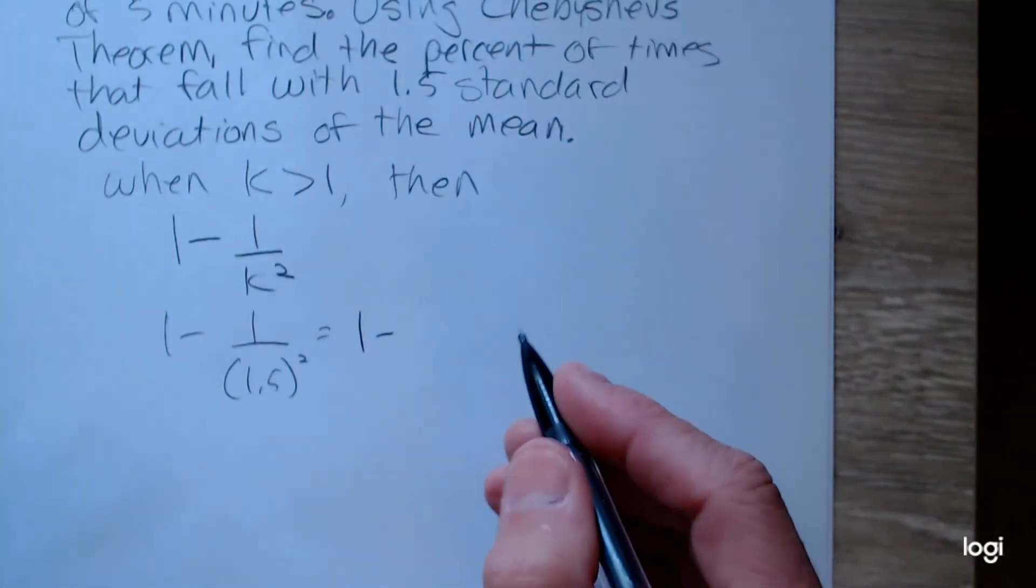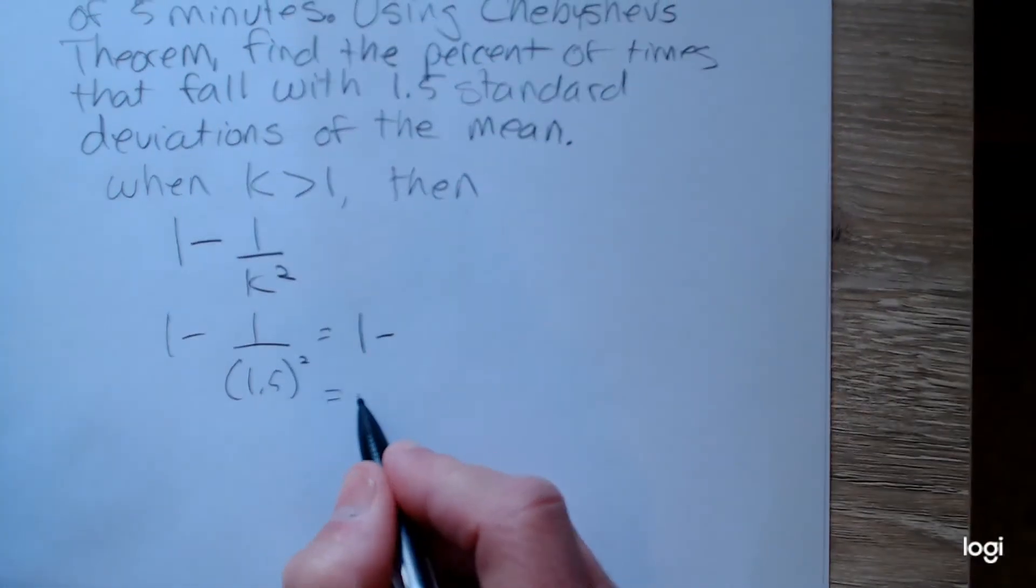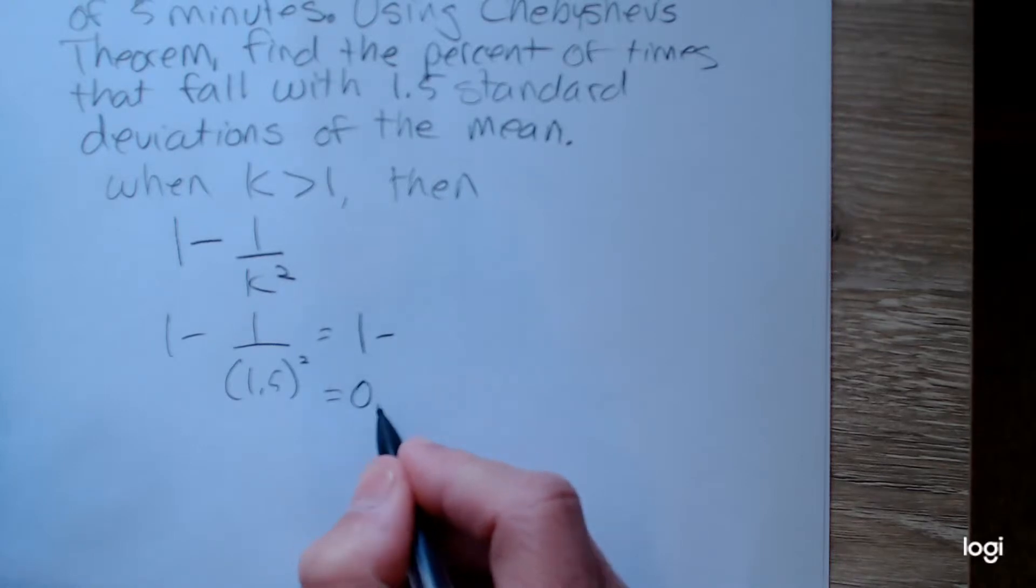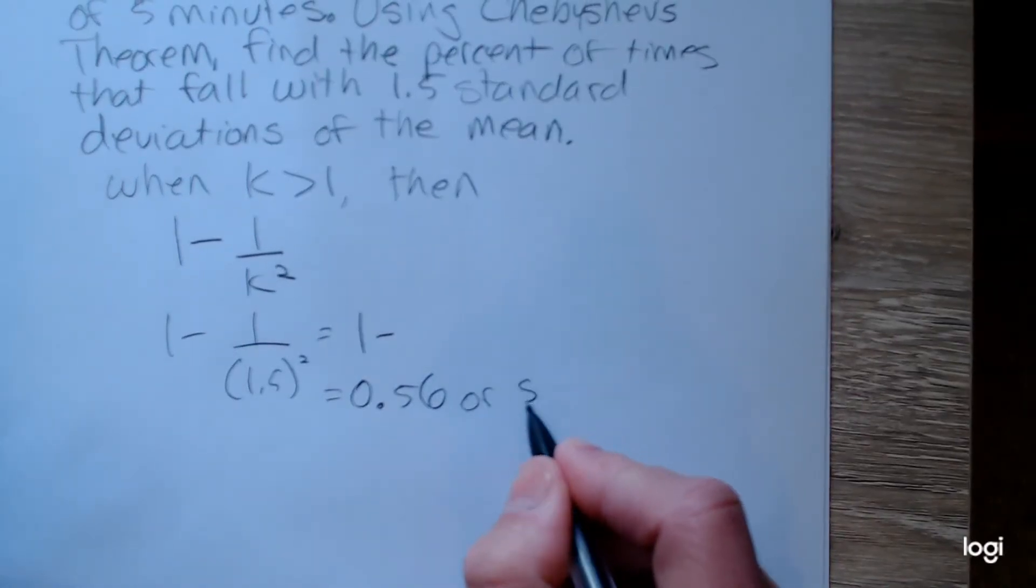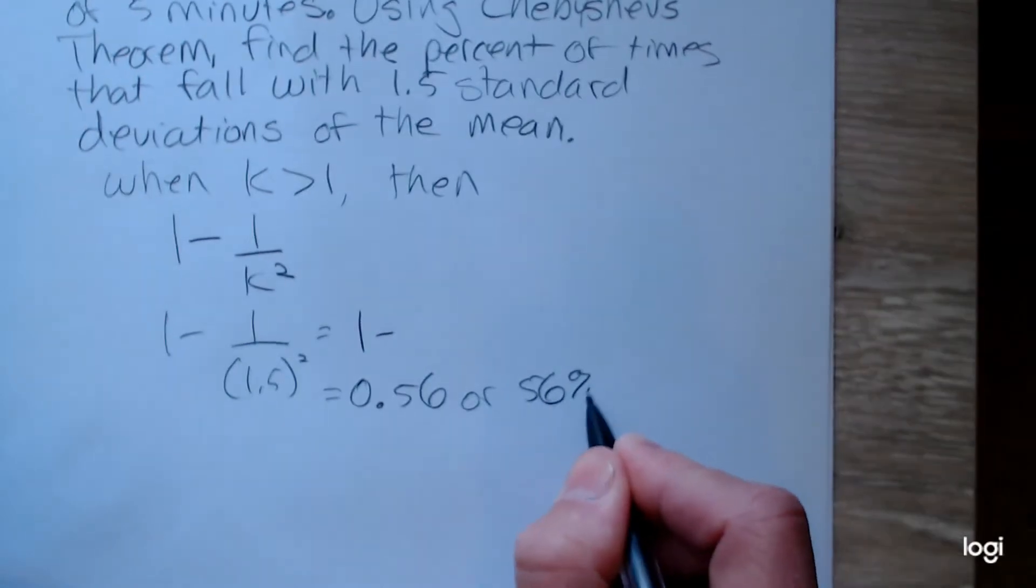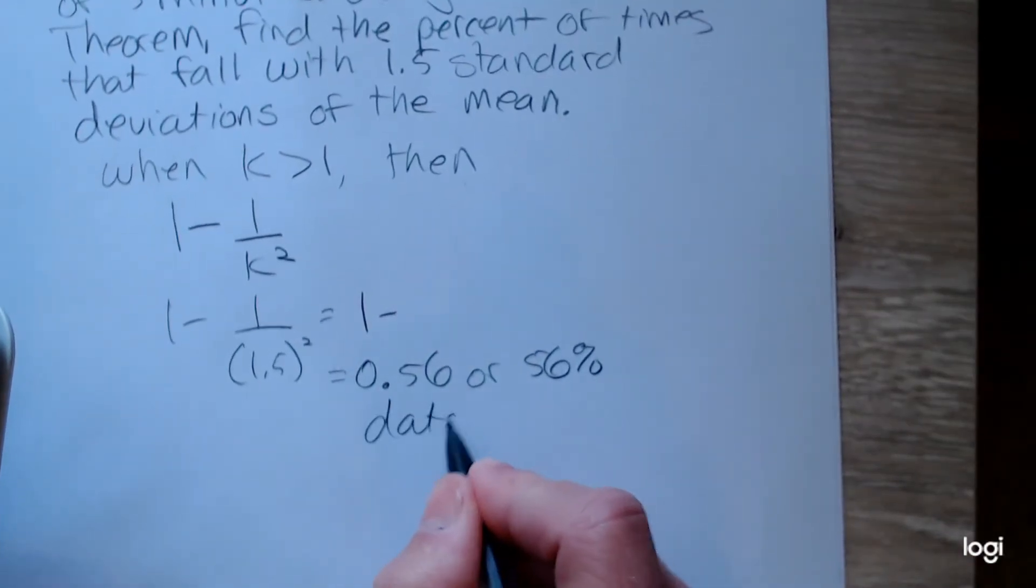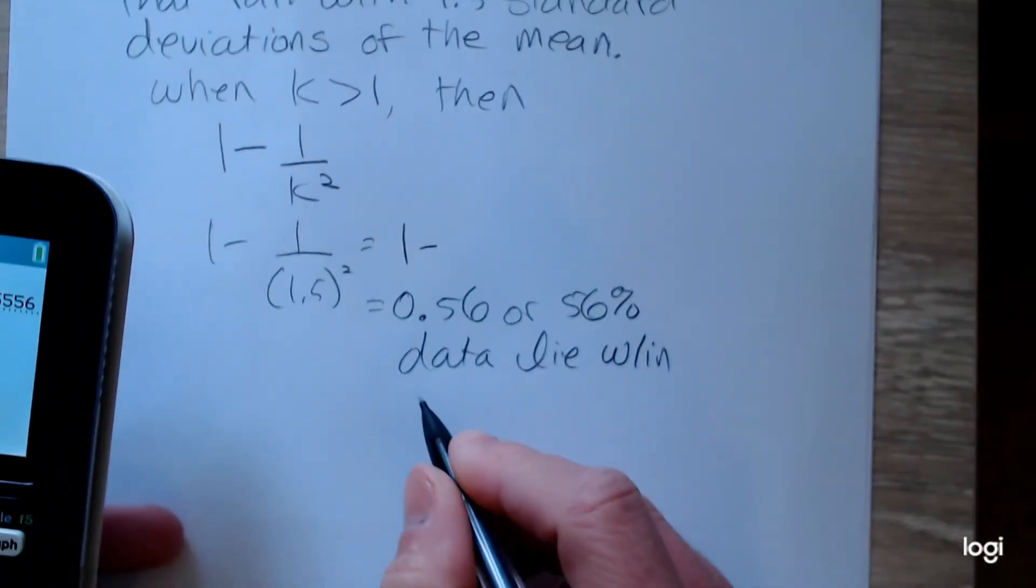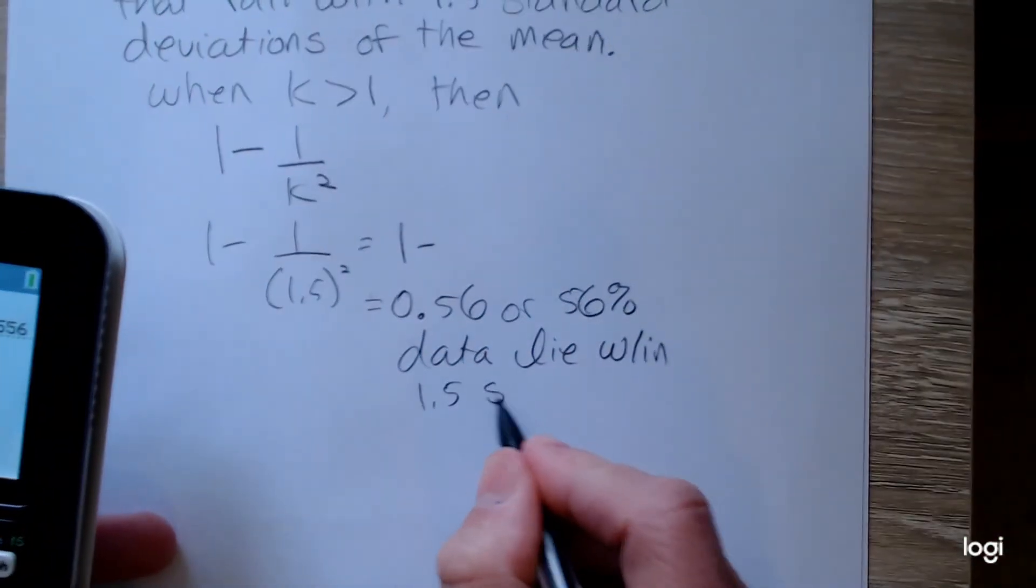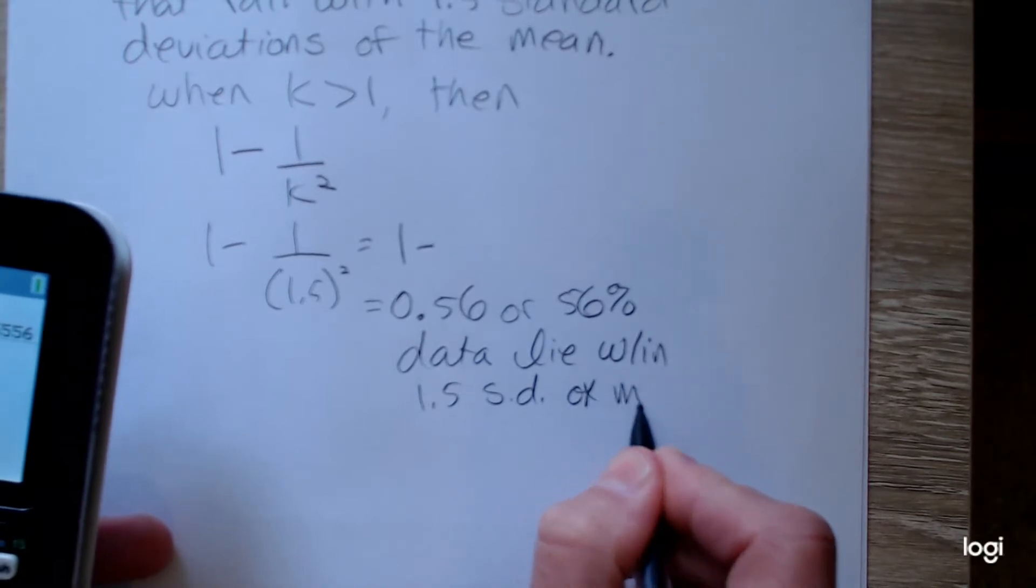I just jumped to the answer, sorry about that. So that would be approximately 0.56, or about 56% of the data lie within 1.5 standard deviations of the mean.